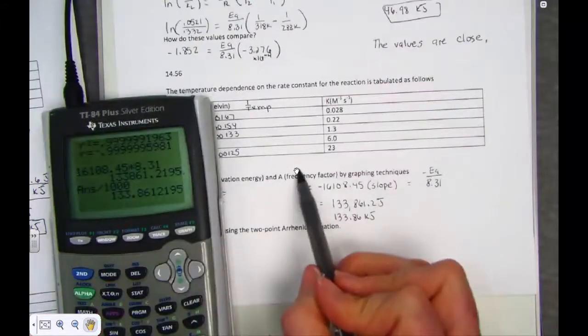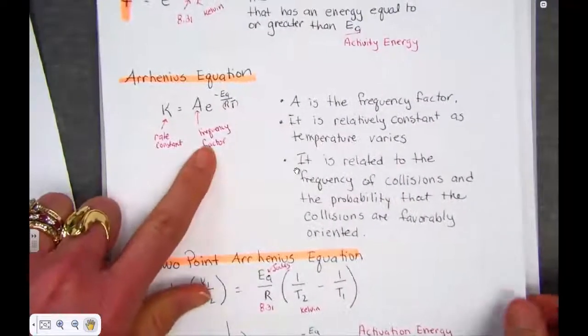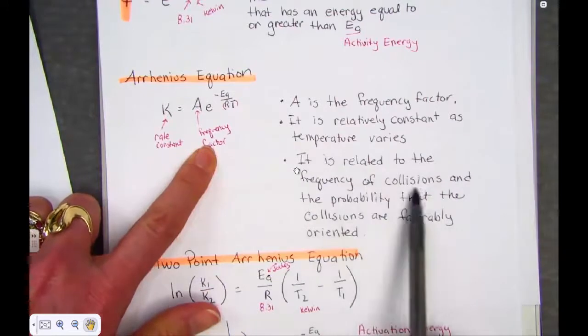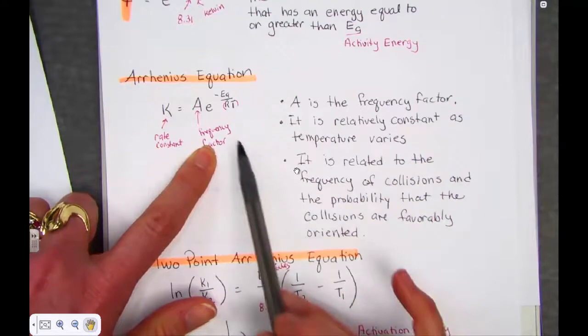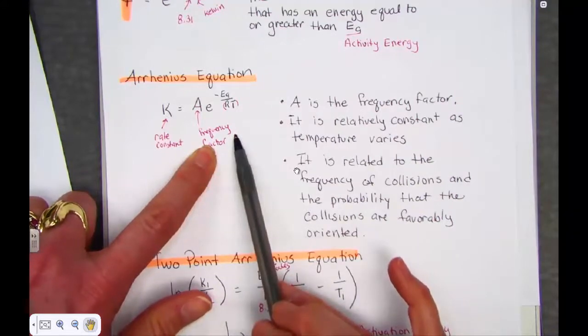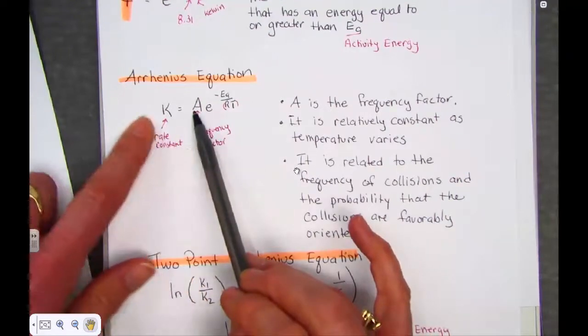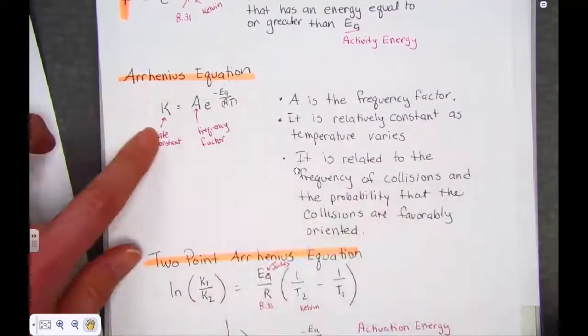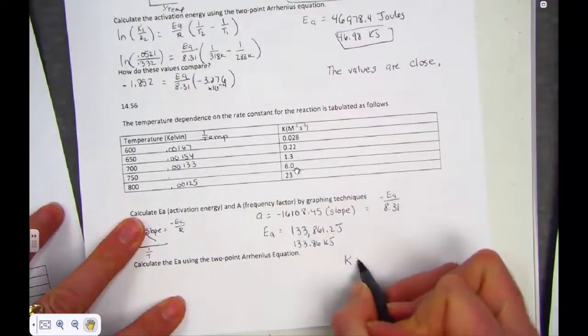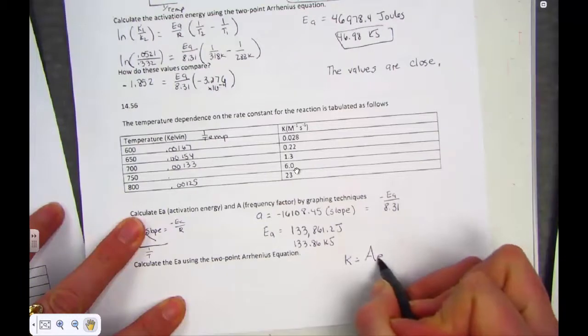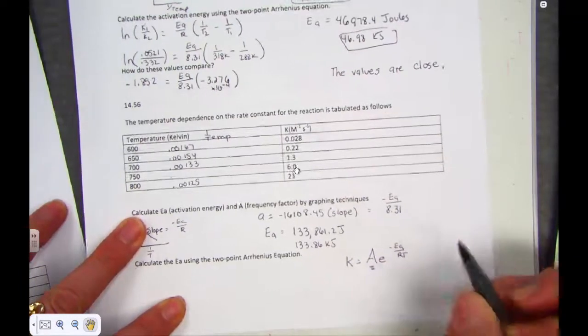We're also asked to solve for the frequency factor. Remember, from our formula page, the frequency factor. Related to the frequency of collisions and the probability that collisions are favorably oriented. That frequency factor indicates how many of these collisions are actually successful. Frequency factor comes from the Arrhenius equation. We take a k constant, AE raised to the negative Ea over RT. This is what we're trying to solve for.